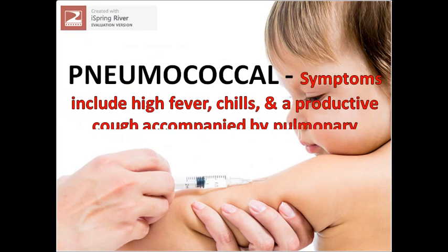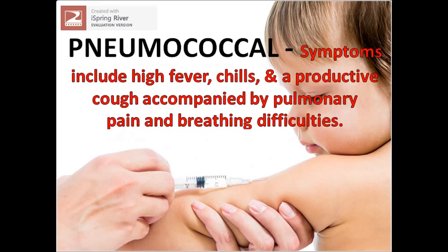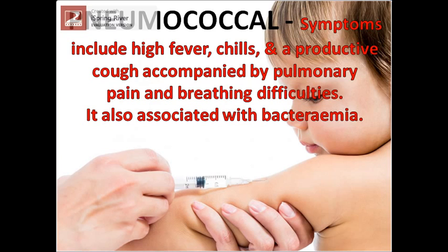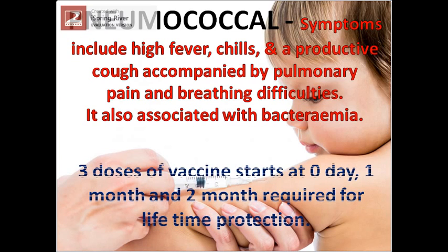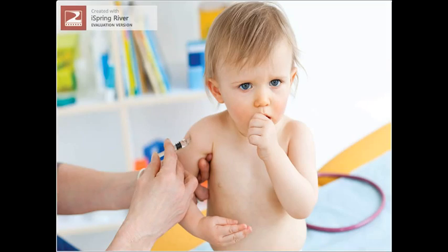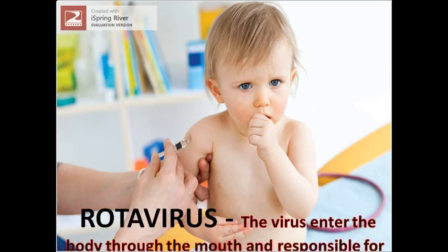Pneumococcal: symptoms include high fever, chills, and a productive cough accompanied by pulmonary pain and breathing difficulties. It is also associated with bacteremia. 3 doses of vaccine starting at day 0, 1 month, and 2 months, required for lifetime protection.